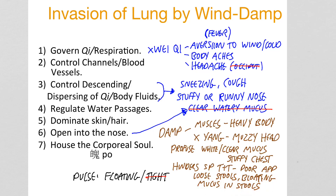Loose stools, bloating abdomen, or mucus in the stools. The pulse becomes floating and slippery, and the tongue coat becomes thick, sticky, and white. There are lots of similar symptoms with wind cold, wind heat, and wind damp — they each have their own flavour and they're all acute invasions, all sudden bugs.